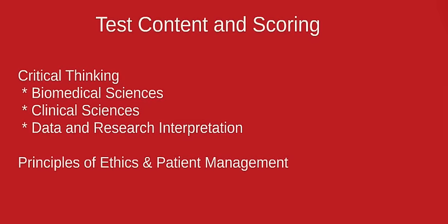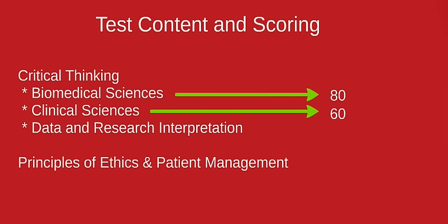The ADAT will consist of four sections. Biomedical Sciences will have 80 questions. Clinical Sciences will have 60 questions. Data and Research Interpretation will have 30 questions, and Ethics and Patient Management will have 30 questions, for a total of 200 questions.